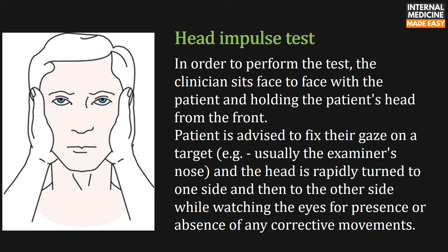To perform the test, the clinician sits face-to-face with the patient, holding the patient's head from the front. The patient is advised to fix their gaze on a target, usually the examiner's nose, and the head is rapidly turned to one side and then the other, while watching the eyes for the presence or absence of any corrective movements.